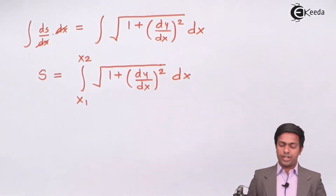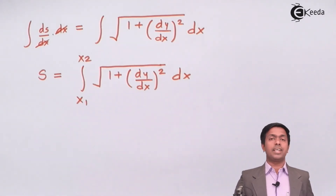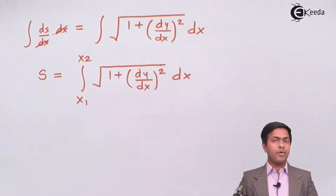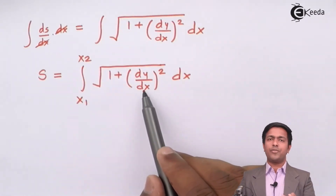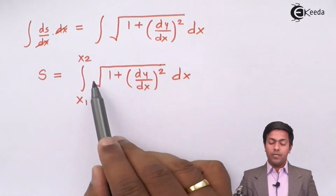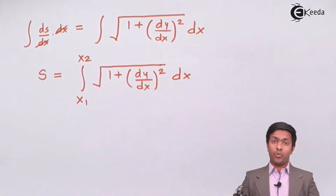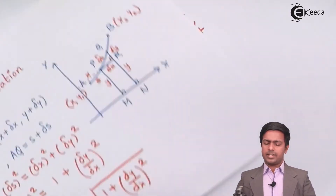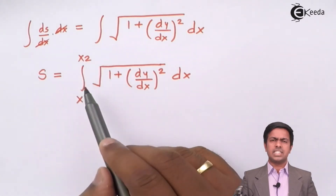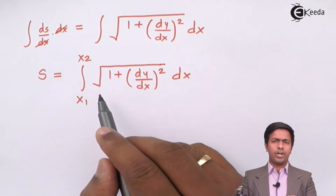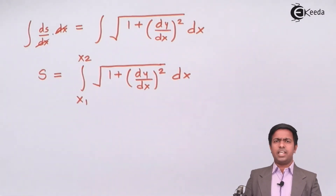This is the formula to find the length of arc AB, and this is how the formula is derived. We will use this formula every time when y is given as a function of x — we find dy/dx, substitute it, square it, add 1, take the square root, integrate, and apply the x-coordinates of the endpoints. This is the formula for length of curve when the curve is given as y = f(x).